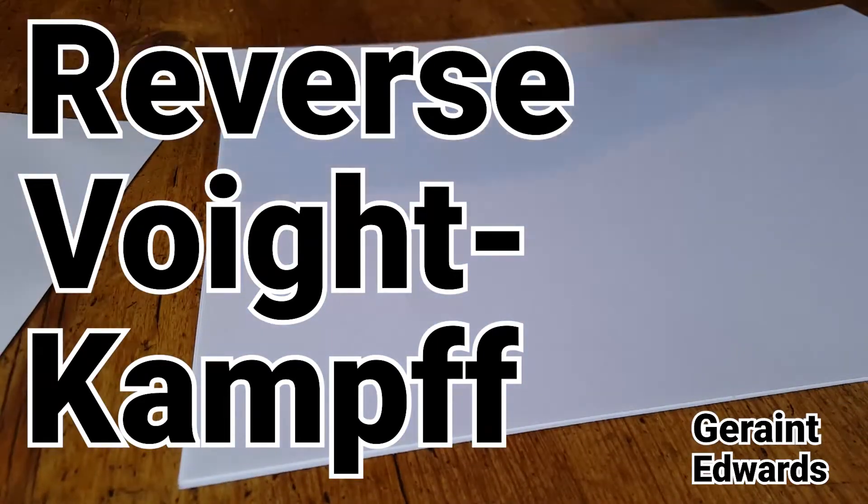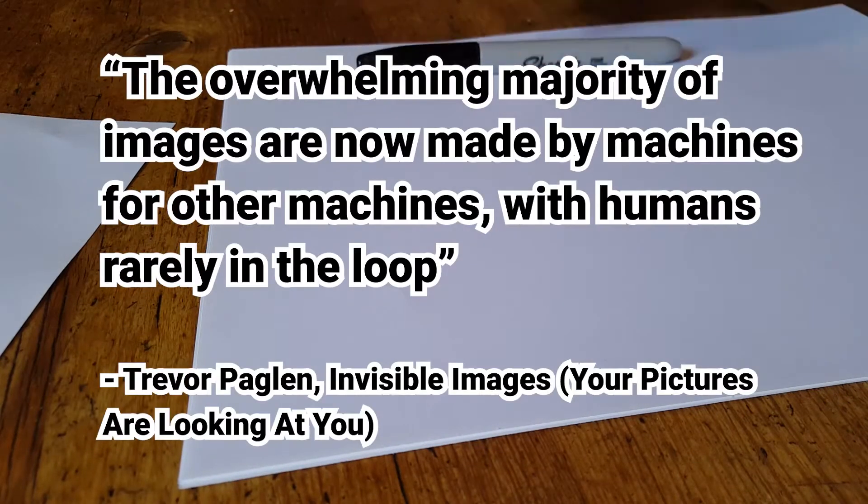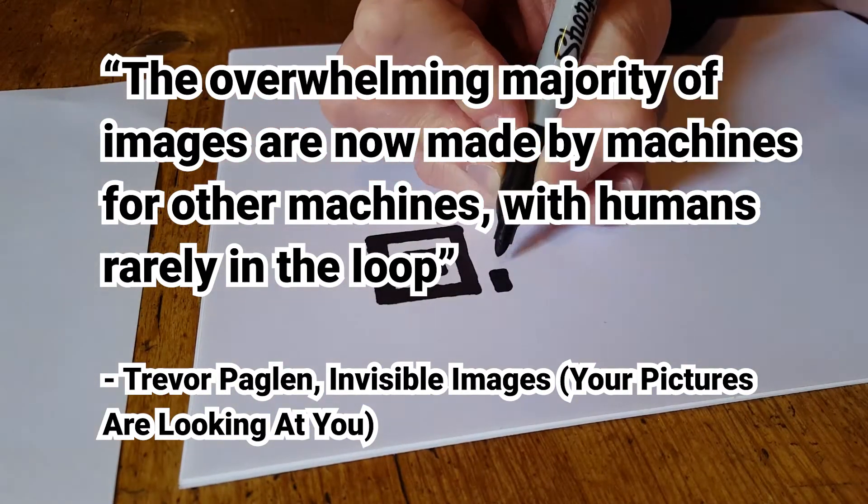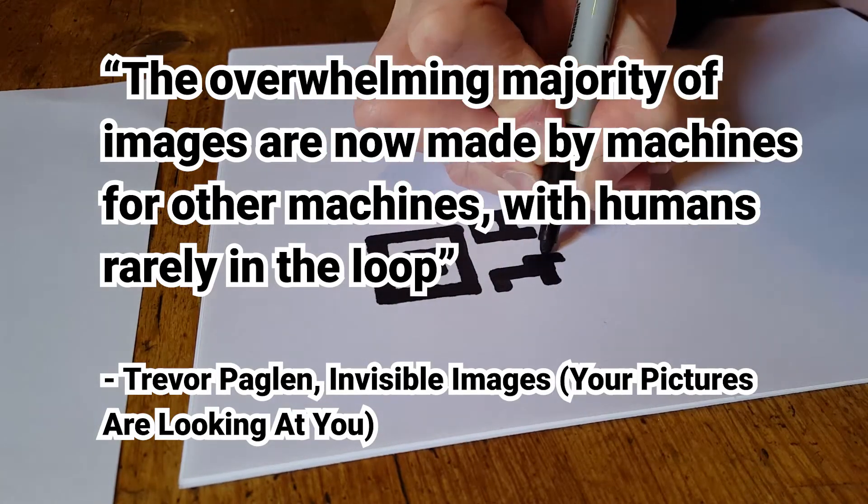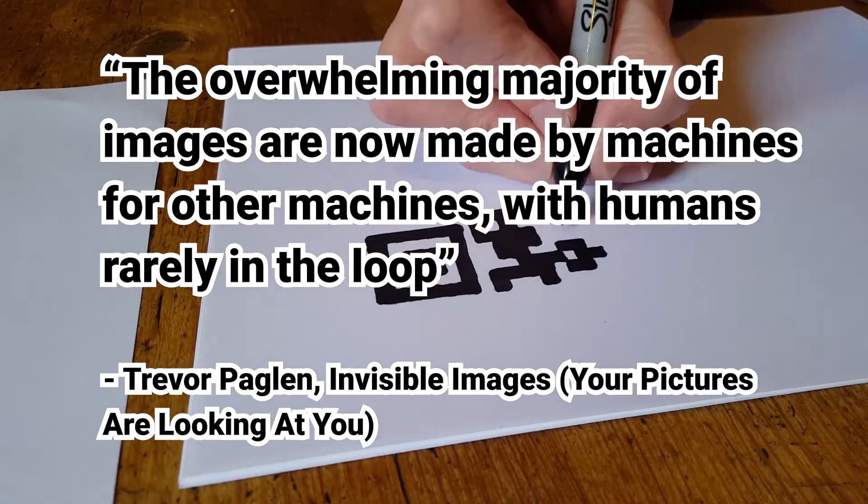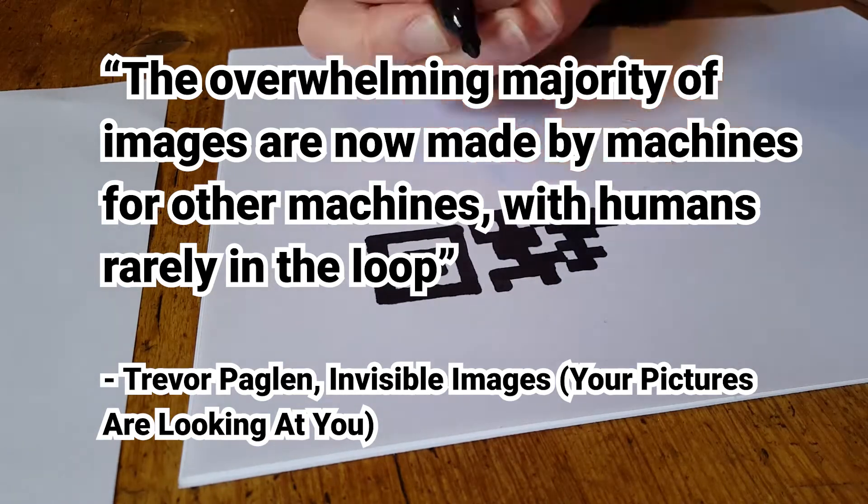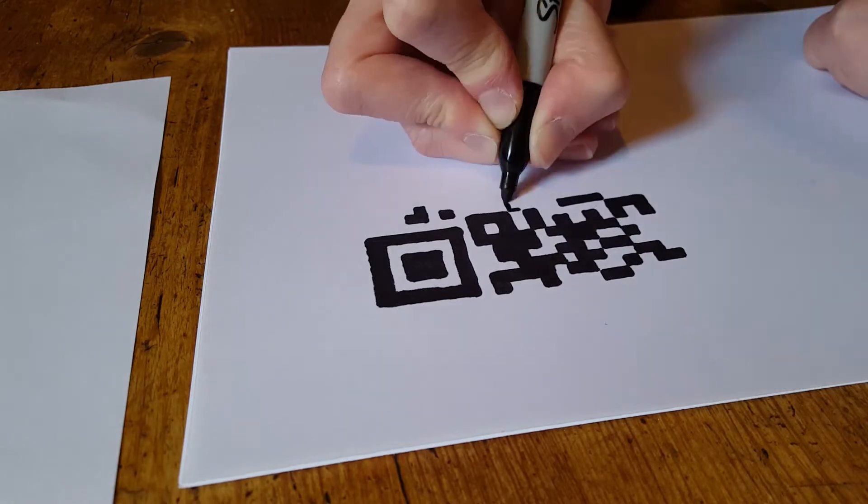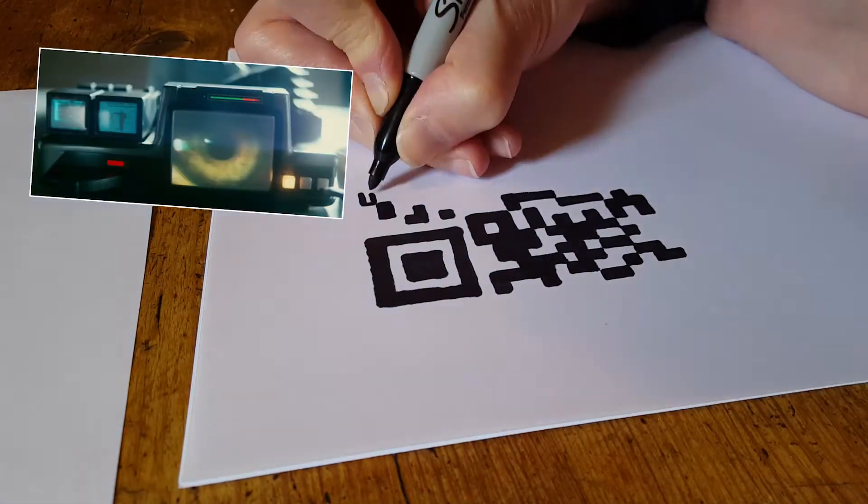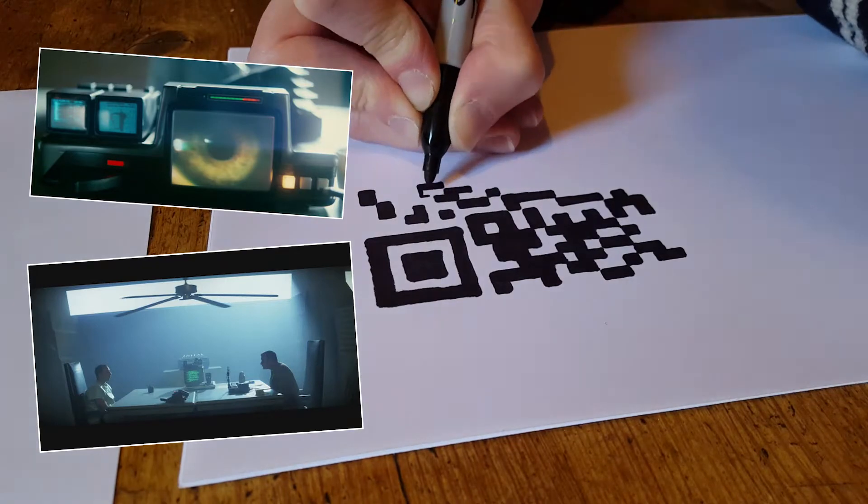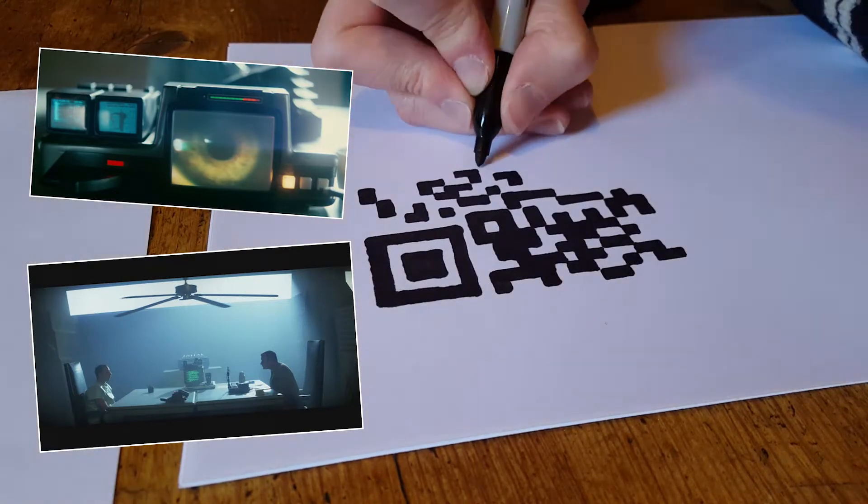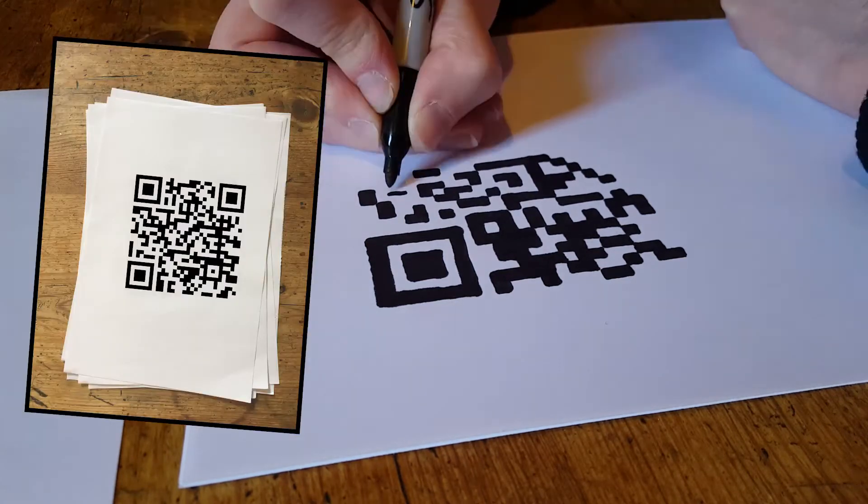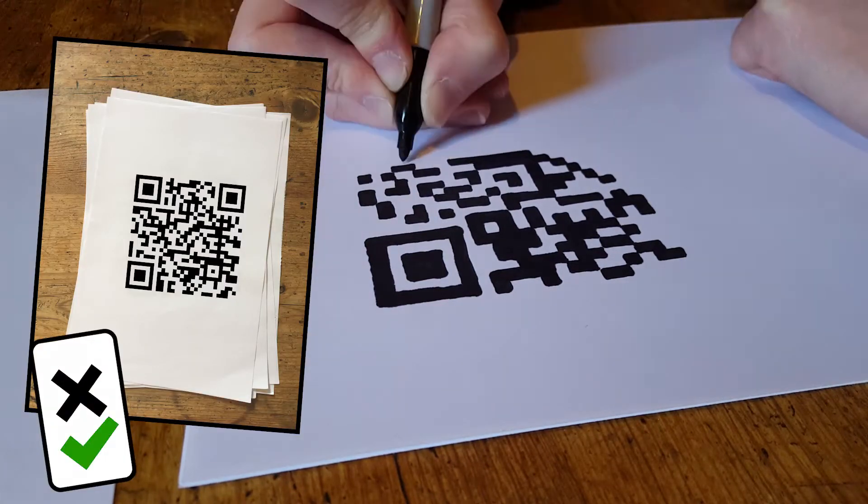Reverse Voidkampf. The science fiction film franchise Blade Runner portrays the Voidkampf test, where participants are asked questions to establish whether they are human or android. You are invited to take a test by drawing a QR code by hand to see whether it will scan.